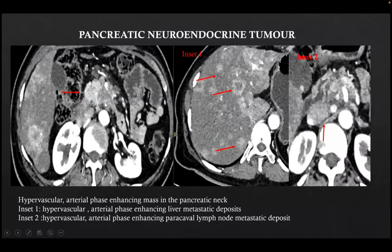This was a case of pancreatic neuroendocrine tumor. We can see a hypervascular enhancing mass in the arterial phase in the neck of the pancreas. In insert 1, we can see hypervascular enhancing liver metastatic deposits in the arterial phase, and in insert 2, we can see hypervascular arterial-phase enhancing paracaval lymph nodes.